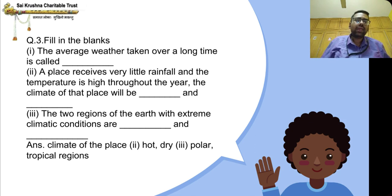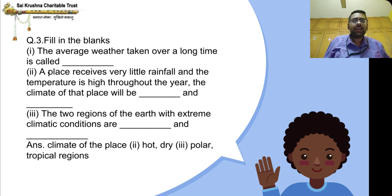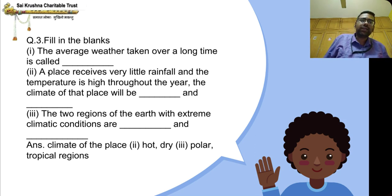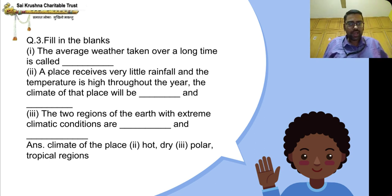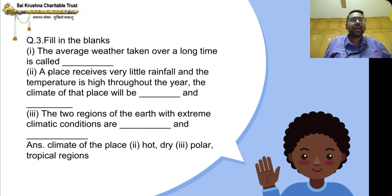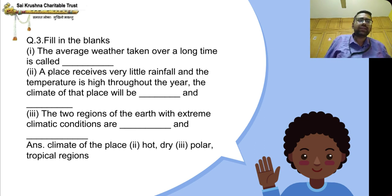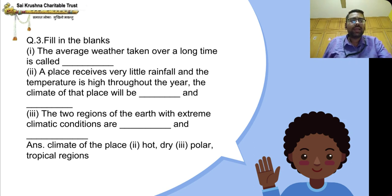Third question: The two regions of the earth with extreme climatic conditions are the polar and tropical regions.